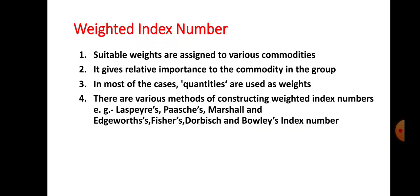Number 1: suitable weights are assigned to various commodities. Number 2: it gives relative importance to the commodity in the group. Number 3: in most of the cases, quantities are used as weights. And number 4: there are various methods of constructing weighted index number.